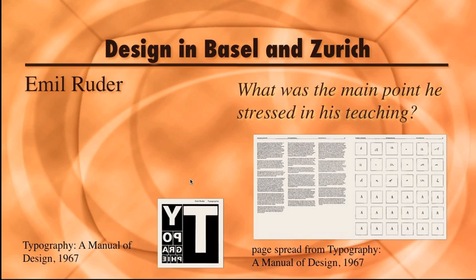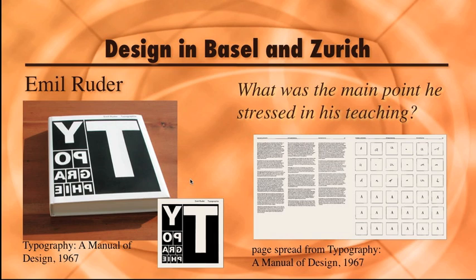In Basel and Zurich, Switzerland, more typographic development occurred. Emil Ruder joined the faculty of the Basel School of Design as a typography teacher. He taught his students to develop a sensitivity to the negative or unprinted spaces, including inside and around the letter forms. Ruder and his students exhaustively explored design possibilities using the Universe typeface. His Typography: A Manual of Design, done in 1967, is one of the most important treatises on the International Style, and his design for the text reflects his beliefs. A page spread illustrates the differences between the written and printed letter form. Tell me what was the main point he stressed in his teachings.